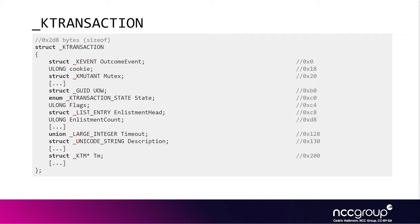If you look at the structure, a few things stand out. There is a cookie, which seems to be associated with all KTM structures — each one has its own little cookie value unique to the type. So all KTransaction structures will have the same cookie value, and all KResourceManager structures will have the same cookie value as well. They all also have a mutex associated with them, which gives you an idea about the type of logic used to access them. The fact that a mutex exists implies there are potentially multiple threads trying to manipulate these structures, which can hint at the type of bugs you might find.